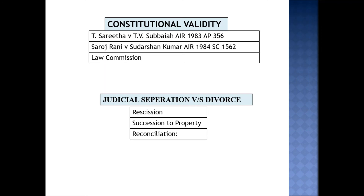According to Section 13 of divorce, grounds exist for both husband and wife, with some special grounds for the wife. The decree of judicial separation can be rescinded on application of either party after the court is satisfied by the honesty of the statement and considers it just and reasonable. The key differences between judicial separation and divorce are: first, recession — a decree of judicial separation can be rescinded but a decree of divorce cannot. In judicial separation, if parties decide they are ready to cohabit again, they can cancel the decree; but in divorce, to cohabit again, they need to remarry.